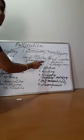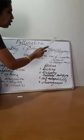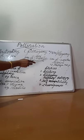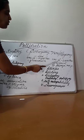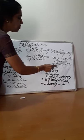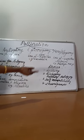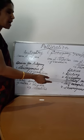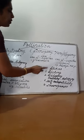The third one is xenogamy or allogamy. Here, actual cross pollination takes place — the transfer of pollen grains from one flower to another flower of a different plant, from one plant to another plant. Example: papaya and maize.